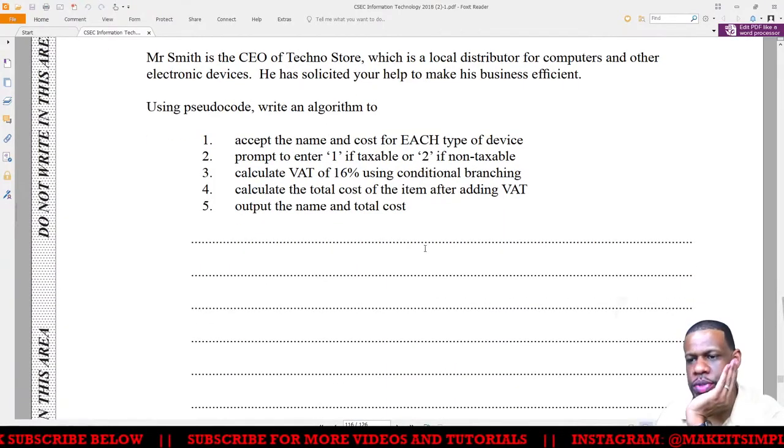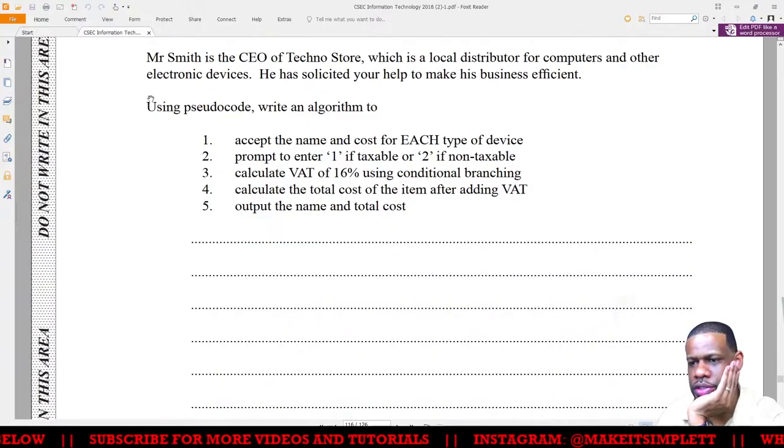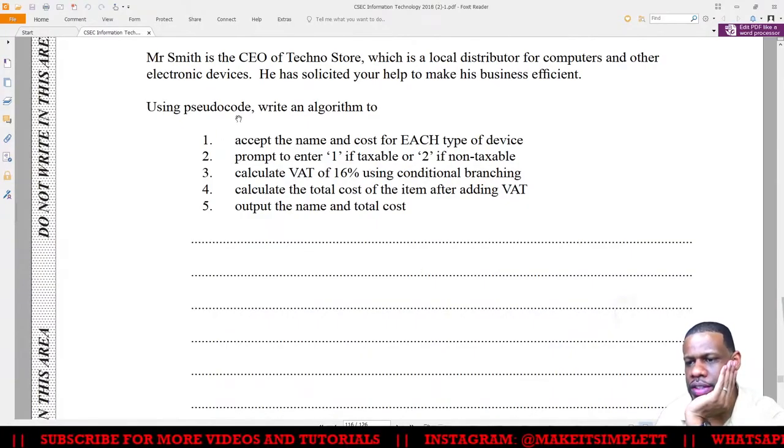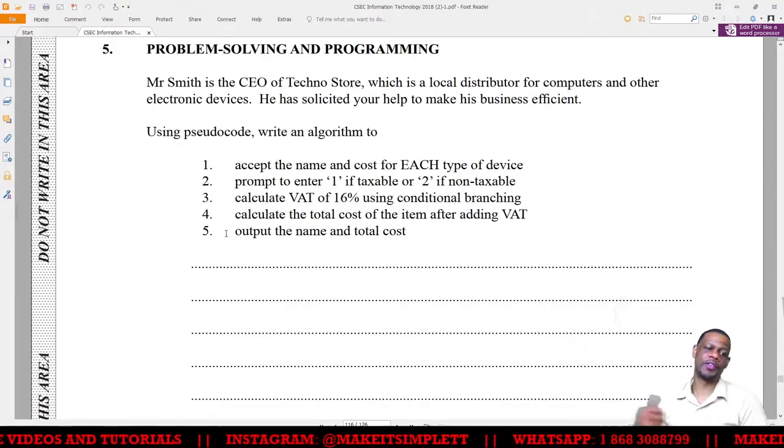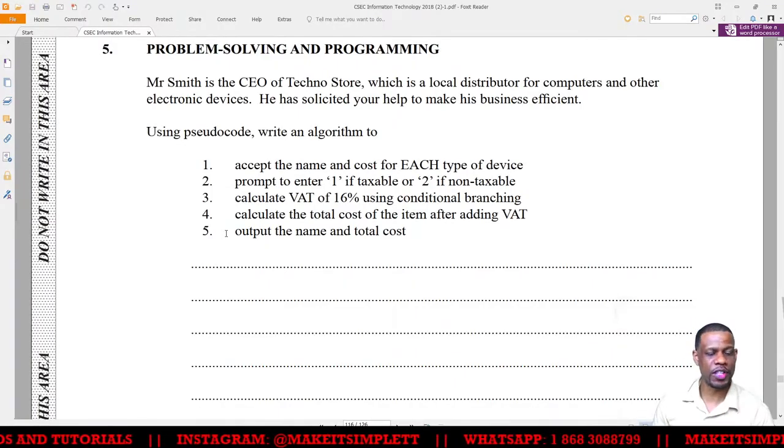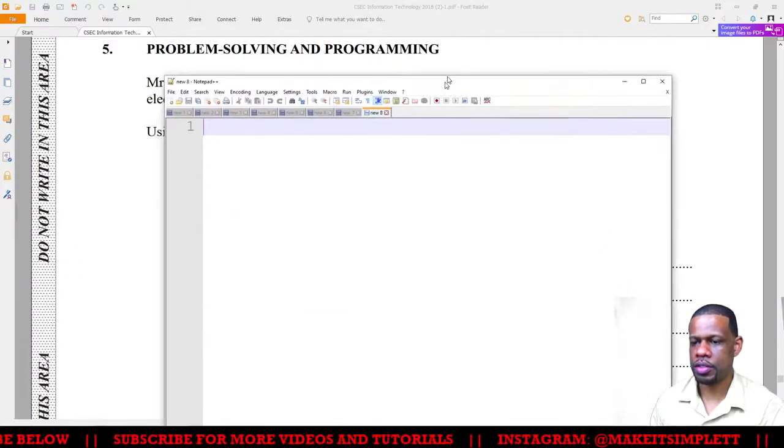Problem solving and programming. Mr. Smith is the CEO of Techno Store, a local distributor for computers. Using pseudocode, write an algorithm to do these five things. One algorithm you have to write for 15 marks, and you can kill off this paper.